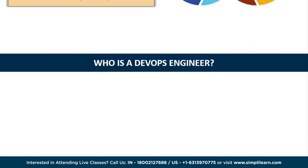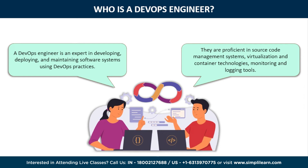Let's explore who is a DevOps engineer. A DevOps engineer is an expert in developing, deploying, and maintaining software systems using DevOps practices. They work closely with IT operations, developers, and stakeholders to ensure efficient software delivery. Their responsibilities include implementing automation, continuous integration, and continuous delivery or deployment practices, as well as resolving issues throughout the deployment process. DevOps engineers are proficient in various tools and technologies such as source code management systems, build and deployment tools, virtualization, and container technologies.